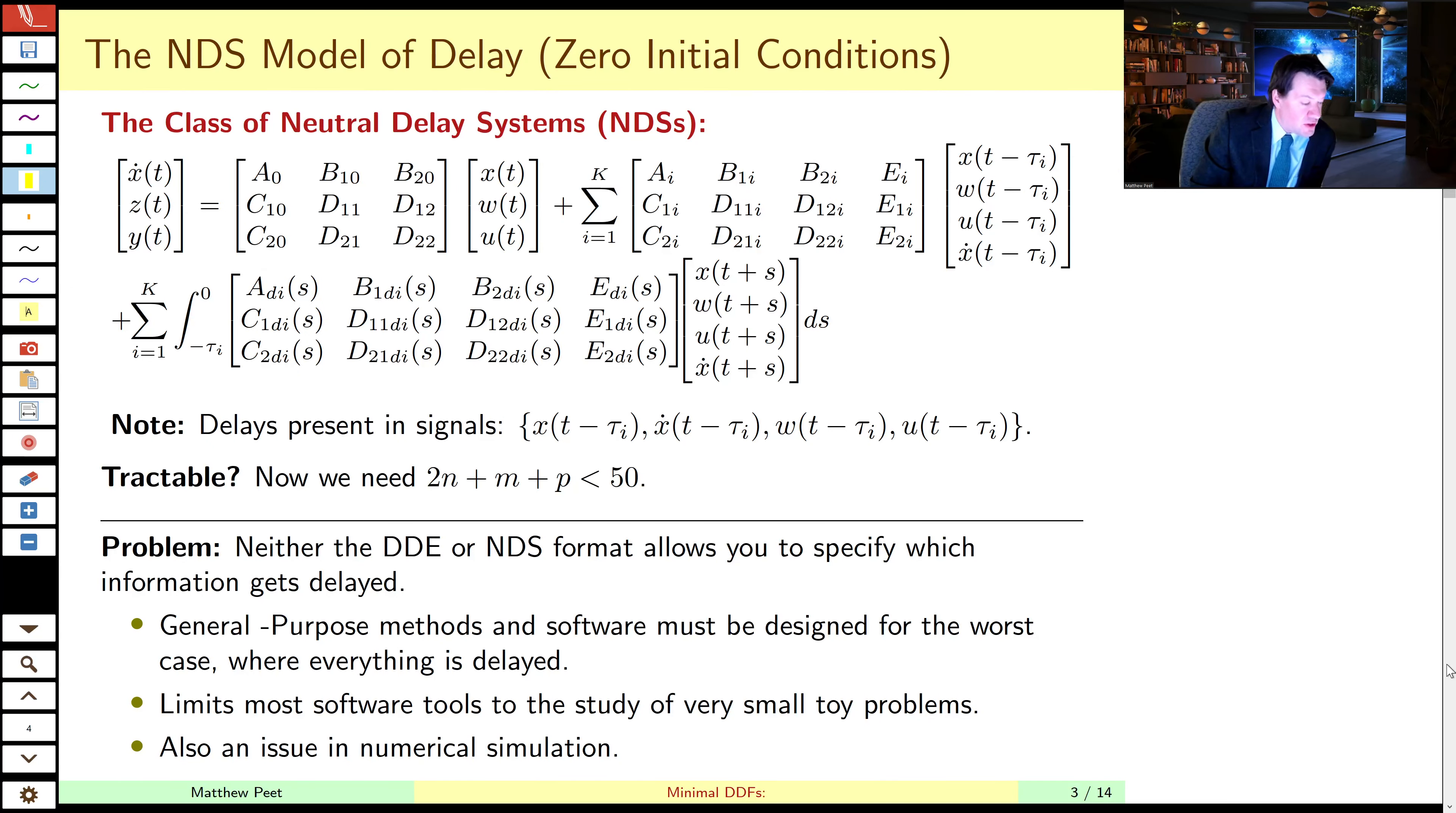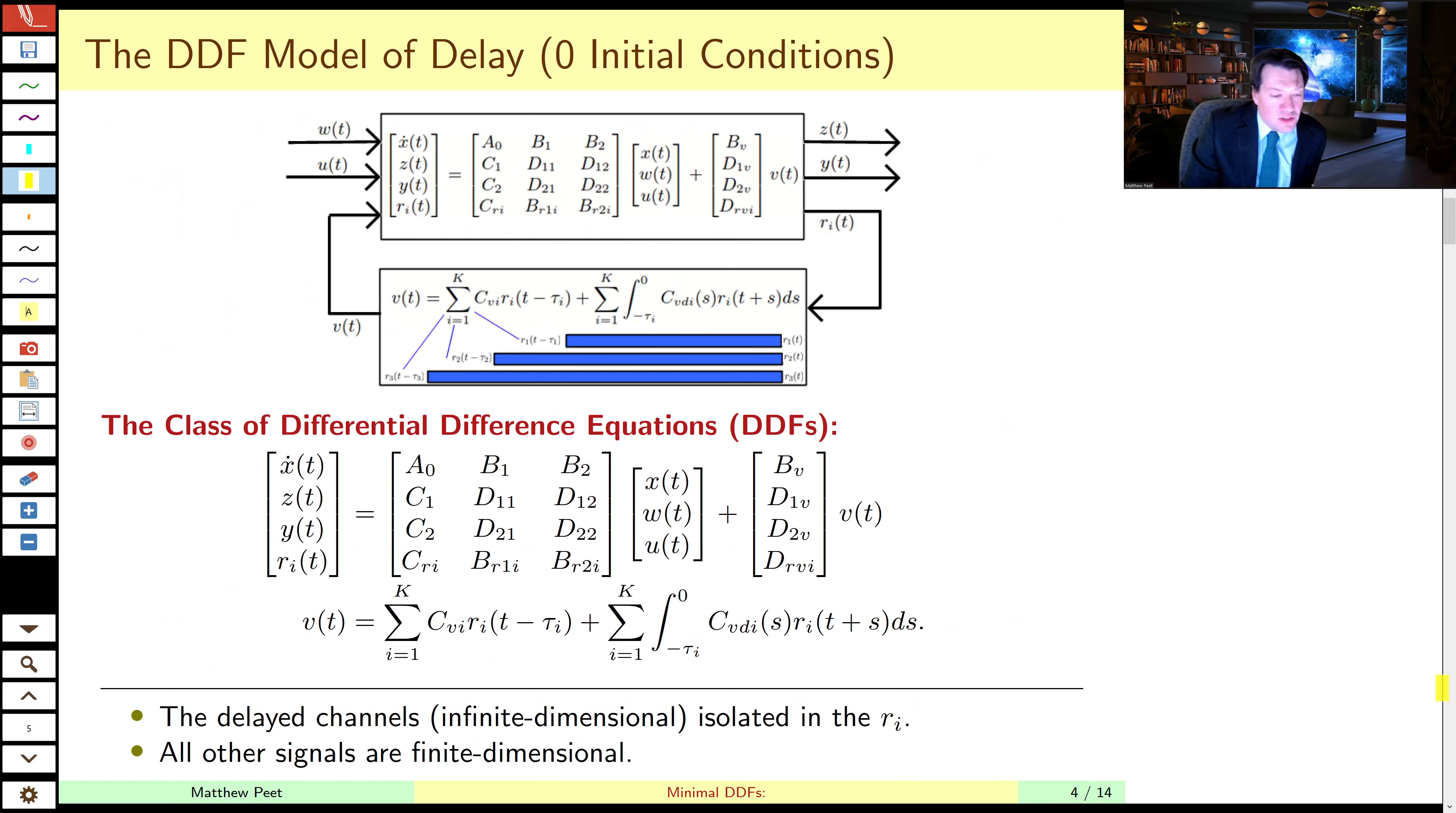So this framework also applies to neutral type systems. The only difference between the DDE and the neutral delay system is the presence of this derivative in the vector. So we won't concentrate on neutral systems very much. So what is a representation which is not the DDE and not the neutral delay system,